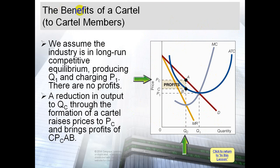The benefits of a cartel to its members: we assume the industry is in long-run competitive equilibrium, producing Q1 and charging P1. At this point, there are no profits — zero economic profit. After joining or forming a cartel, firms gain positive profit.